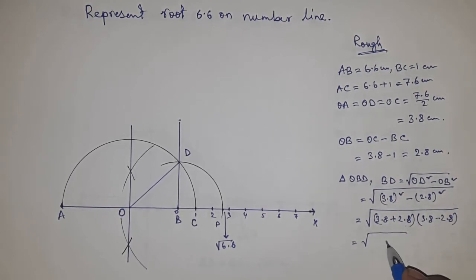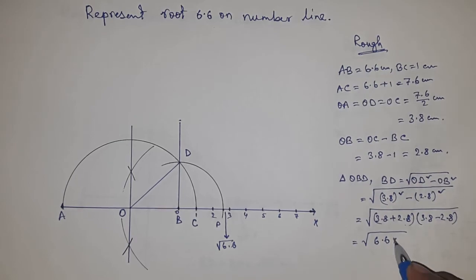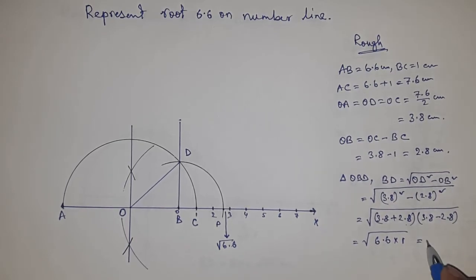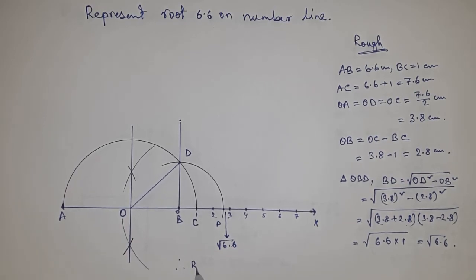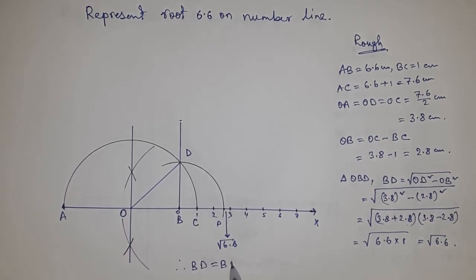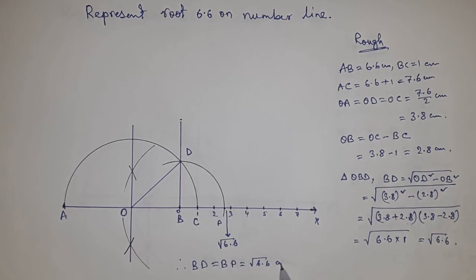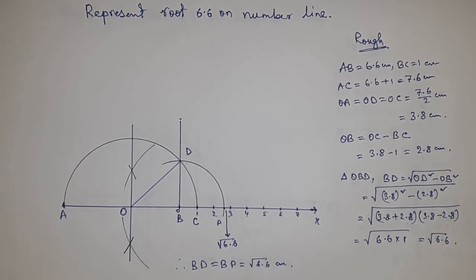From this, we get root 6.6, therefore BD equals BP equals root 6.6 cm. That's all. Thanks for watching. Please subscribe, like, and comment on my video.